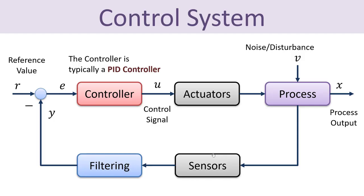Let's start with the basics regarding control engineering. Typically, we have a control system like this example. We have a process that we want to control. In order to control the process, we need to have a controller — typically a PID controller. That's the most used controller today. We need to measure some of the states or variables in the process using some kind of sensors. We need to filter these signals using a low-pass filter. And then, based on that, we can find the proper control signal that is sent to the process through one or more actuators. This is basically a basic control system.